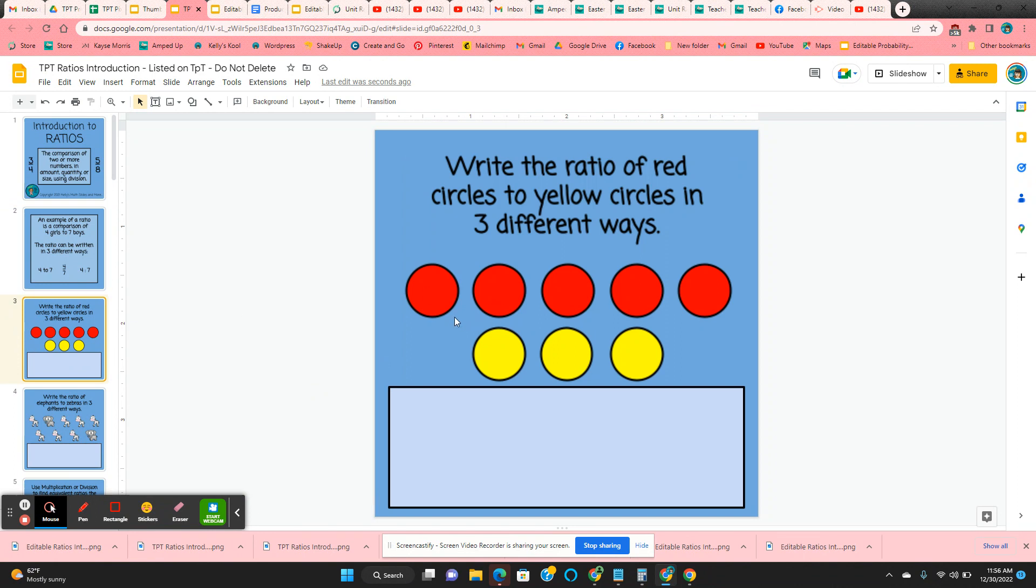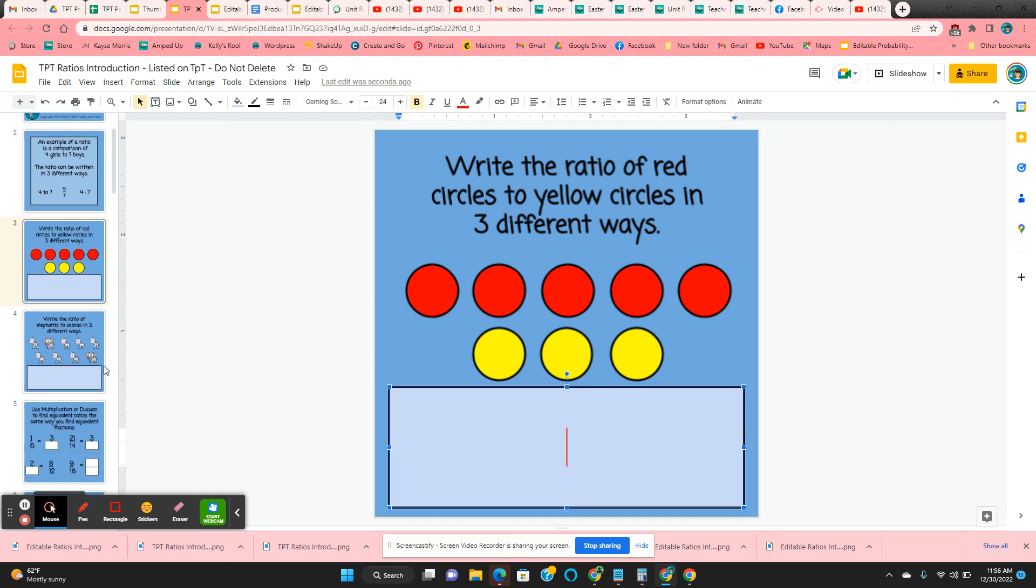Then students are asked to write this ratio in three different ways, red circles to yellow circles, so five to three, and they're to type that in three different ways. So they just click in the box and type.